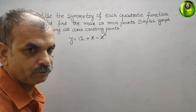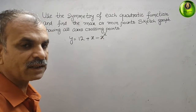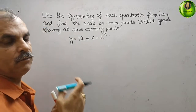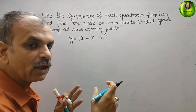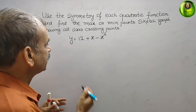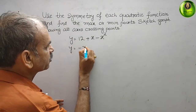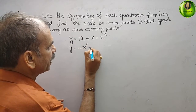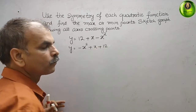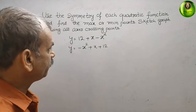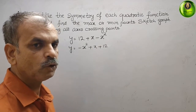First, we will arrange it in standard form, which means writing it in decreasing order of power. So y is equal to minus x squared plus x plus 12. We will complete this equation using the completing the square method.